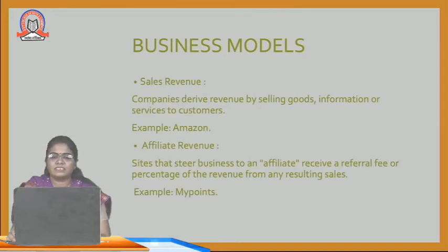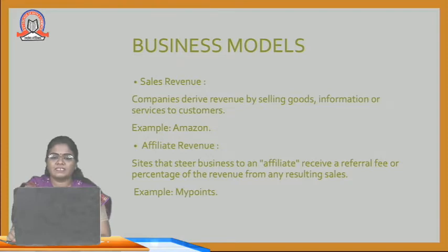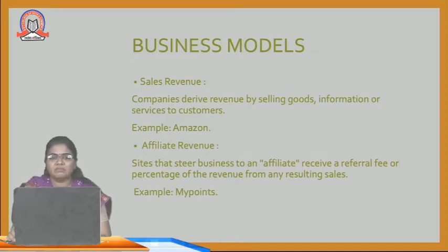Sales revenue model. Companies derive revenue by selling goods, information, or services to customers — for example, Amazon. Affiliate revenue model: sites that steer business to other sites earn a referral fee or percentage of revenue from any resulting sales. An example is mypoints.com.